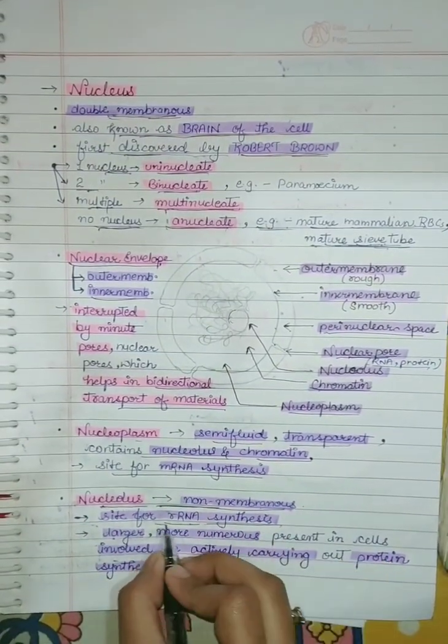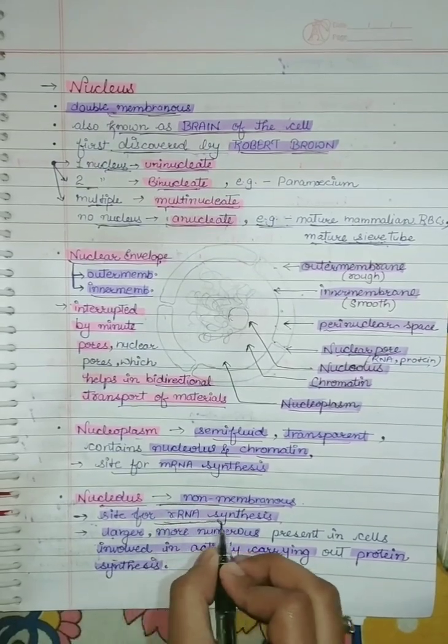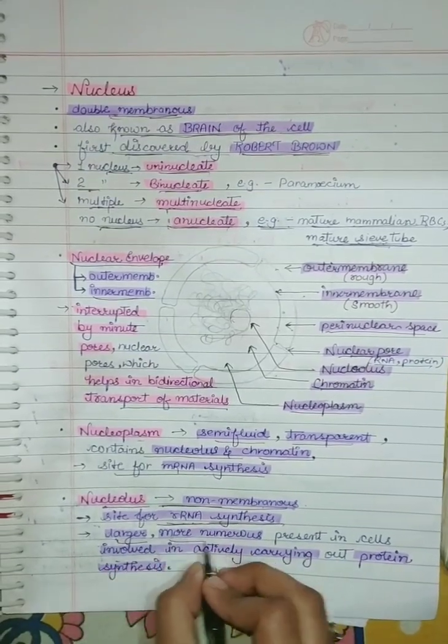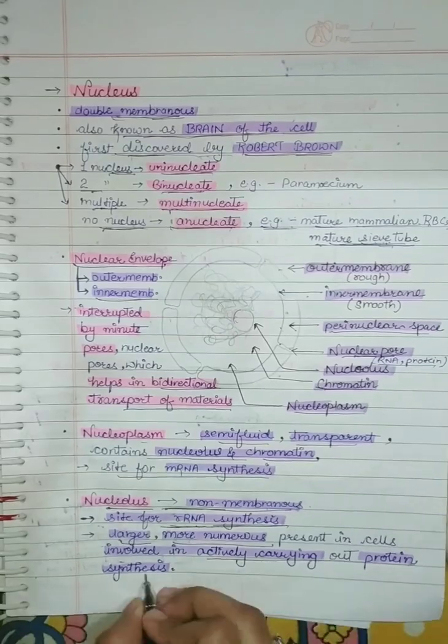Nucleolus is non-membrane bound structure. It is the site for RNA synthesis, that is ribosomal RNA synthesis. It is larger and more in number and actively carrying out protein synthesis.